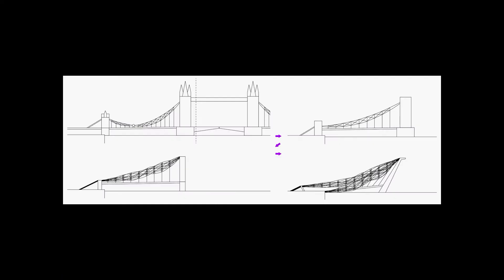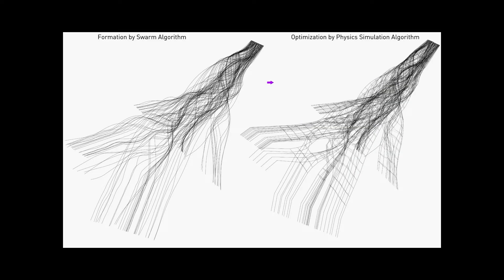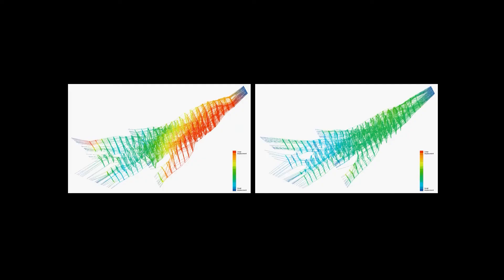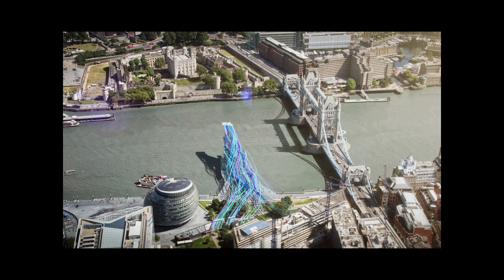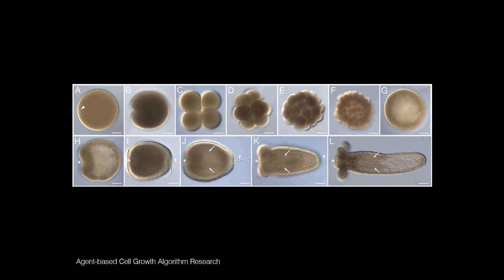A similar approach was applied to a conceptual project to build a pier in the River Thames in London. I used the swarm simulation to create a tensile structure with complex trajectory geometry, and the structure optimization algorithm was applied to create a functional tensile structure with complex geometry. This is my research about a kind of cellular growth algorithm. I was inspired by the mechanism of how cells grow their form out of an embryo — simulating how one node cell divides into two and keeps connection, which creates a bunch of different types of geometry.